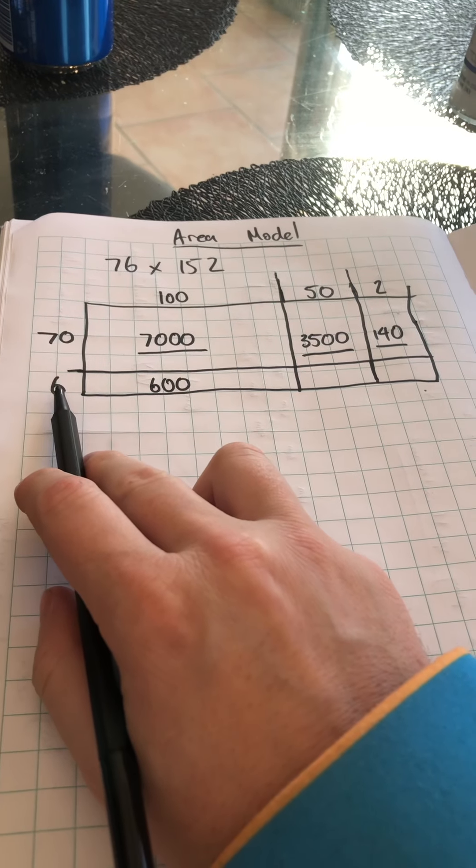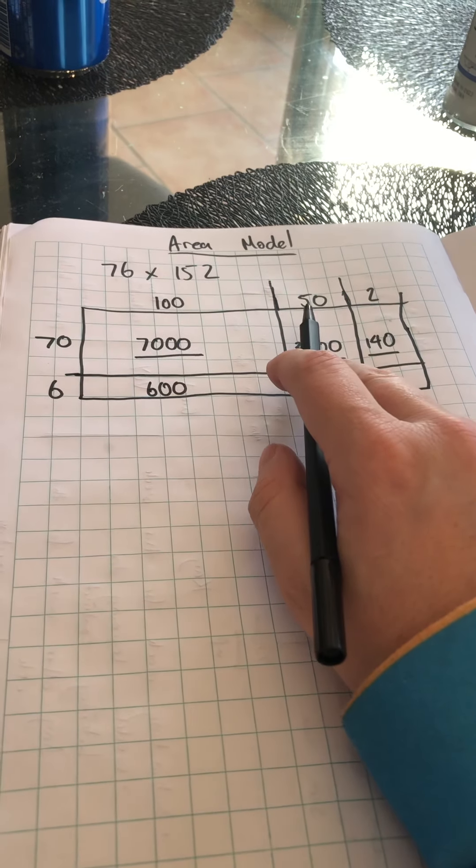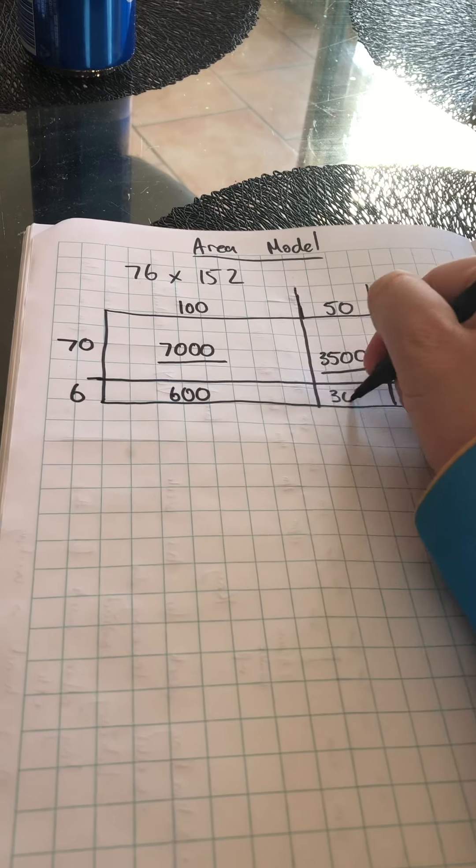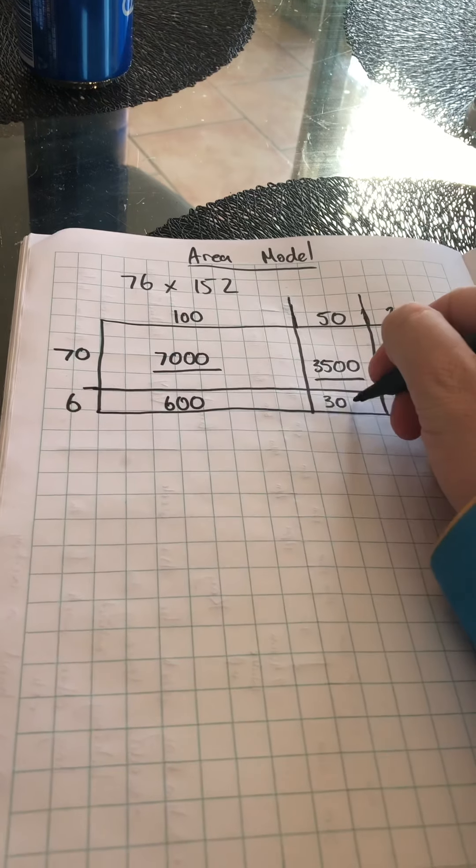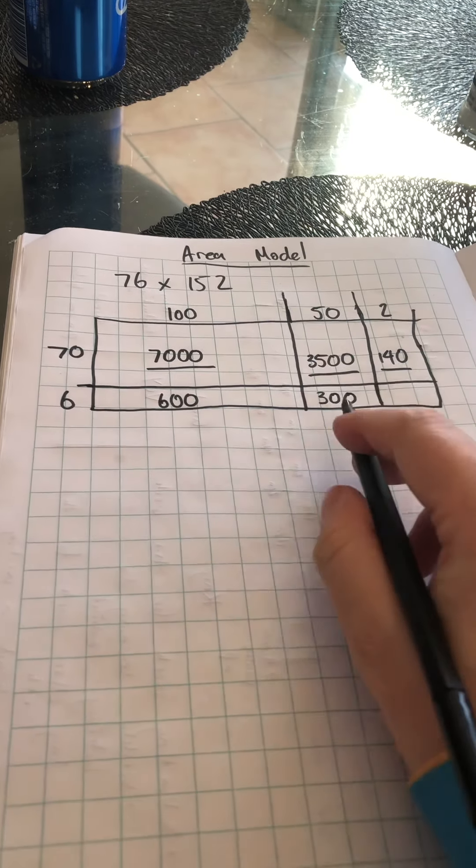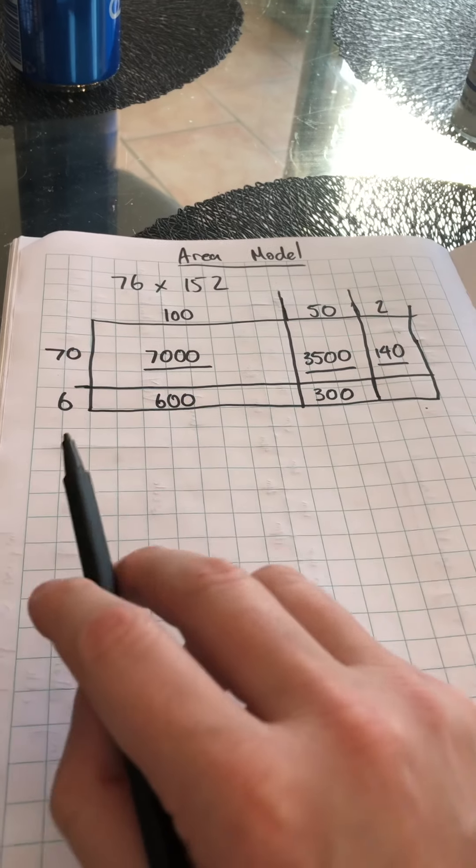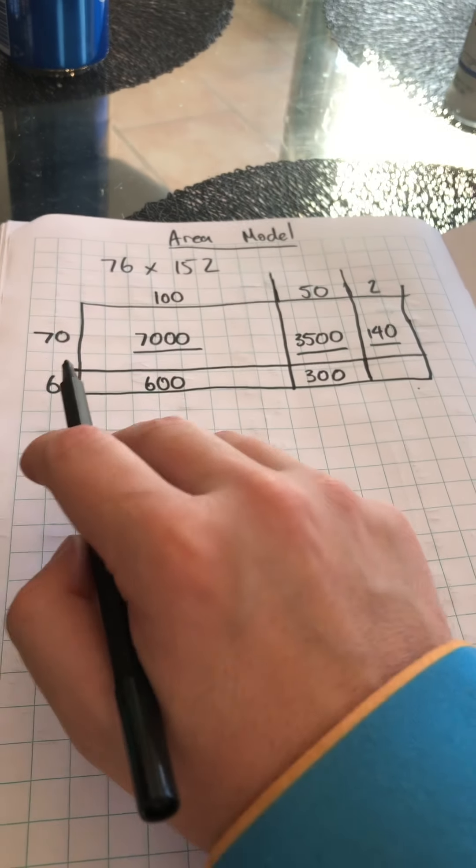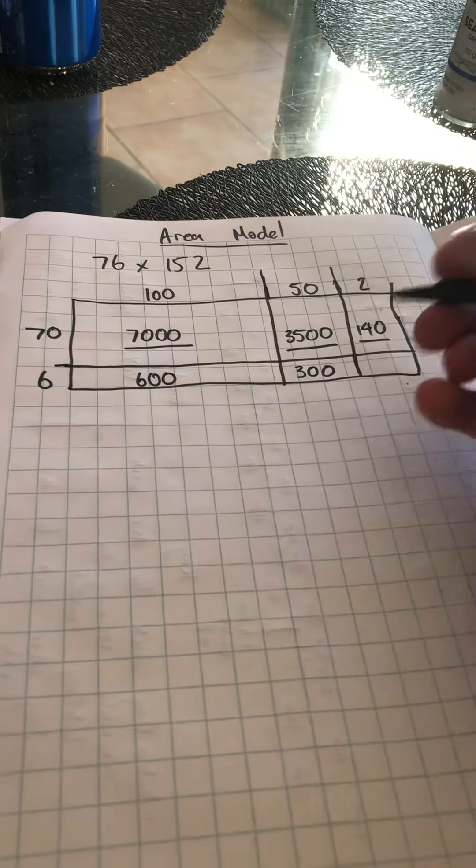I know my next part here is 6 times 50. I know that 6 times 5 is 30, and I've got one extra zero there, which means I've got 300 as the total in that box here. The next part I'm going to do is 6 times 2, which is 12.